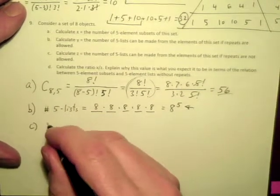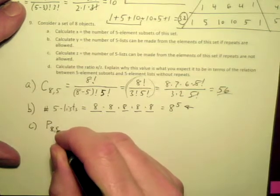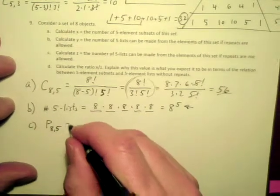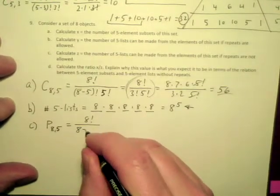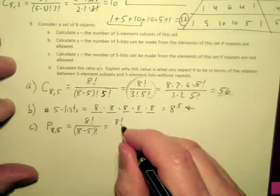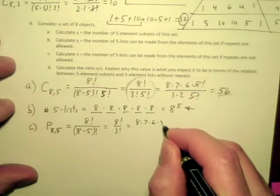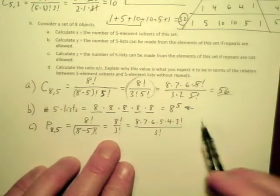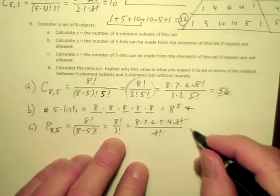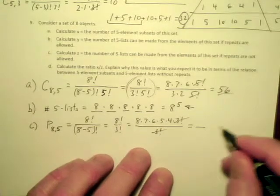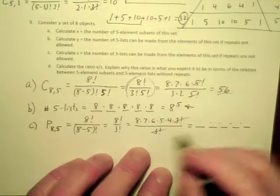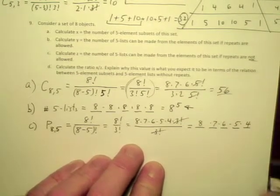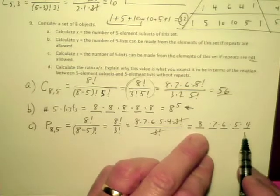For part C, 5 lists if repeats are not allowed. This is where we use P(8,5), the number of permutations of length 5 from an 8 element set. This is 8 factorial over (8 minus 5) factorial, which is 8 factorial over 3 factorial, which is 8 times 7 times 6 times 5 times 4 times 3 factorial all over 3 factorial. You see, I just go down far enough on my factorial until I get to the point where I can make the cancellation with the denominator. This can be reasoned through the counting principle by saying I have 8 choices for the first one, 7 for the second one because I'm not allowed repeats, 6 then 5 then 4. The permutation formula comes right out of the counting principle.